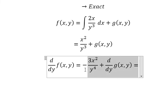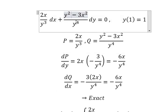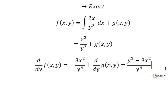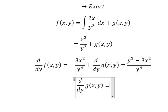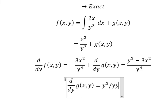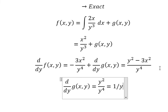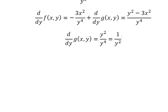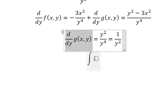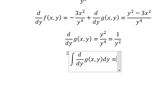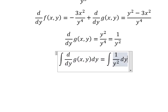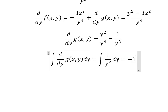We know that this equals the Q expression. Now we simplify: negative 3x over y to the power of 4, and we have y squared over y to the power of 4, which gives us 1 over y to the power of 2. We then integrate both sides and get negative 1 over y.